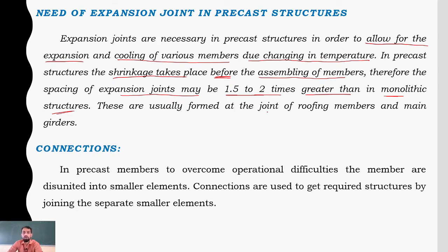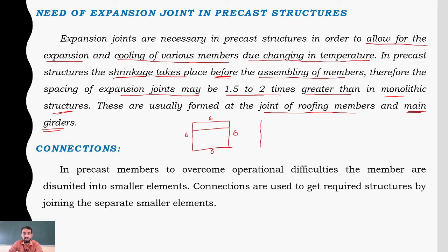Expansion joints are usually formed at a joint of roofing members and main girders. For example, if we take a slab, we cannot get a slab of totally 6 meter by 6 meter in one piece, so it is divided panel-wise into, say, 6 panels. When we join two single panels, there will be an expansion joint between them, allowing for expansion and cooling due to temperature changes.